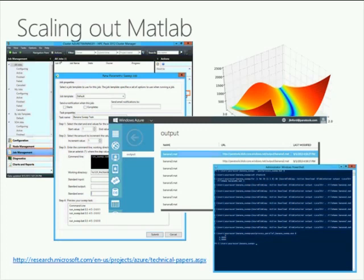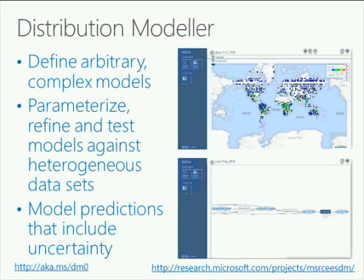I also want to talk about Distribution Modeler — one of the projects here in Cambridge — where we're building a modelling pipeline that uses Fetch Climate to fill in data. You can write models and it records the provenance of those models, then share them on SkyDrive. We're moving this to run in Azure. You can see things like fire prediction and weed prediction models. We're really excited about being able to use the cloud this way so people can do much better collaborative science.